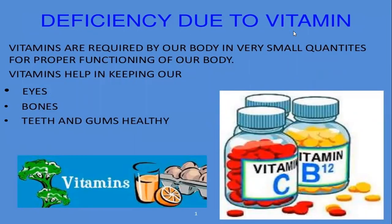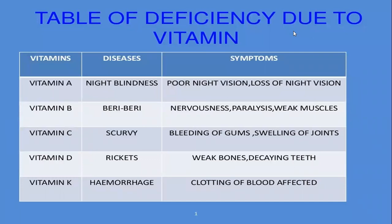Next is deficiency due to vitamins. What happens if we are not including vitamins in our diet? We know that vitamins are required in very small quantities for the proper functioning of our body — they keep our eyes, bones, teeth, and gums healthy. There is a table showing different types of vitamins and what diseases can be caused if we are not taking them. This table is very very important — I want everybody to learn what types of diseases are caused due to the deficiency of which vitamins.